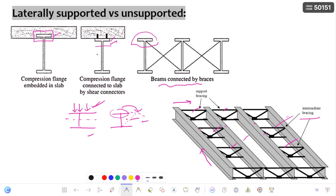Because of this transverse loading on the I-section, the section is not attaining its full material capacity and it is failing — meaning whatever bending strength the section has, it is not attained completely. Before that, the section is going to fail because of lateral torsional buckling. This is not favorable to the engineer. So whatever the engineer will try to do is restrain this compression flange against lateral torsional buckling, so that the beam is called a laterally supported beam and it will attain the full capacity during the loading condition.